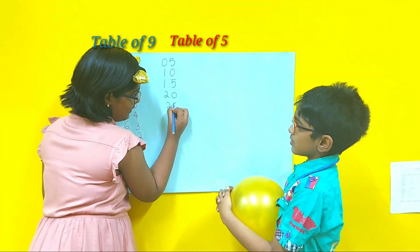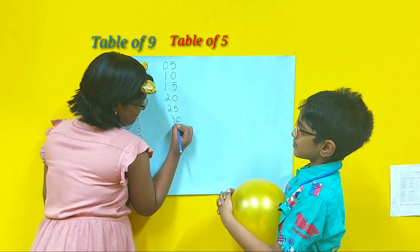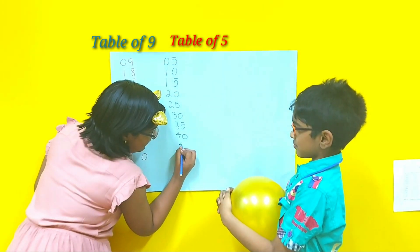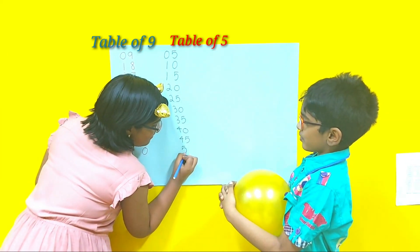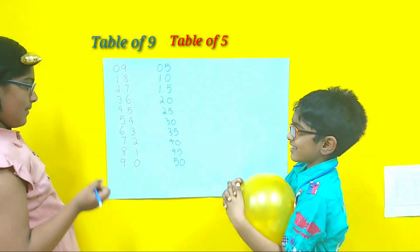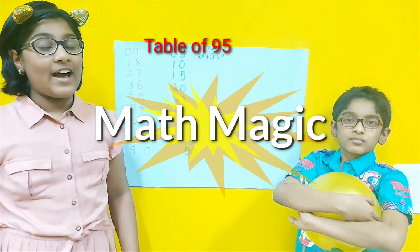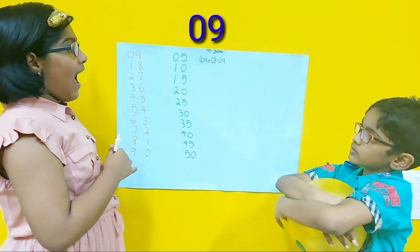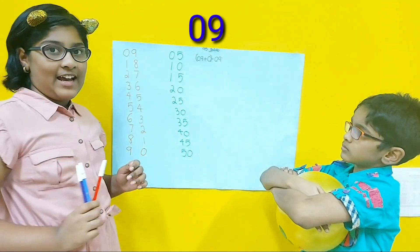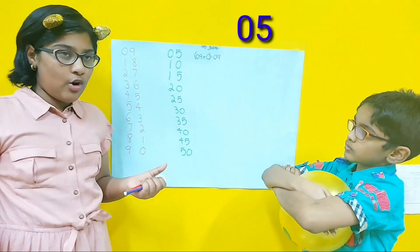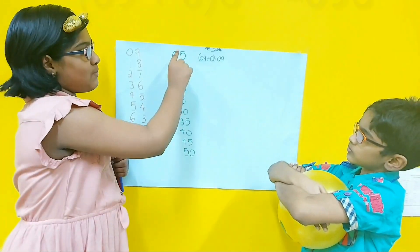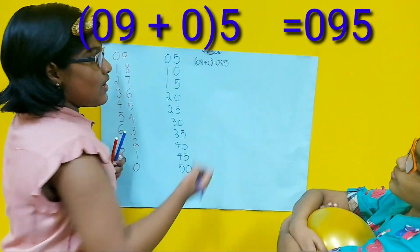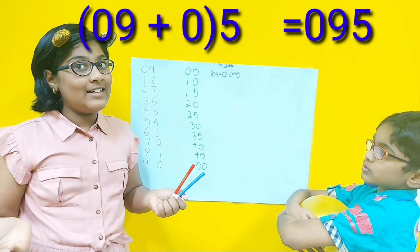25, 30, 35, 40, 45, 50. Now we are going to write the table of 95. The trick is: let's take the first product of 9, which is 09, and add it with the number in the tens place of the 5-table product, which is 0. So 9 plus 0 is 9. And now let's place the 5 next to the 9 in the ones place. So what is 95 into 1? 95.